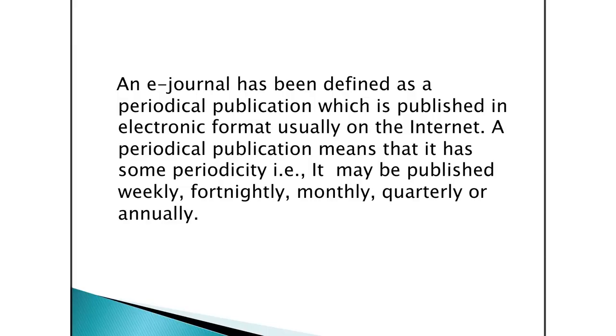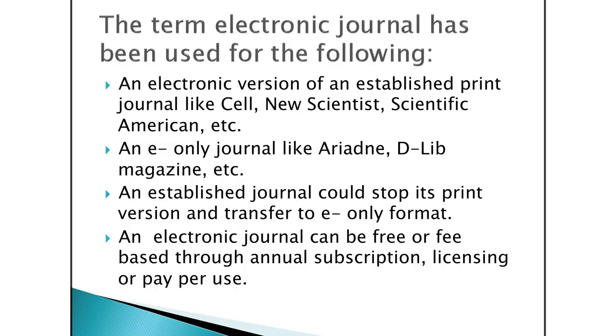We will talk about e-journals first. An e-journal has been defined as a periodical publication which is published in electronic format, usually on the internet. A periodical publication means it has some periodicity — it may be published weekly, fortnightly, monthly, quarterly or annually. The term electronic journal has been used for electronic versions of established print journals like Cell, New Scientist, and Scientific American.